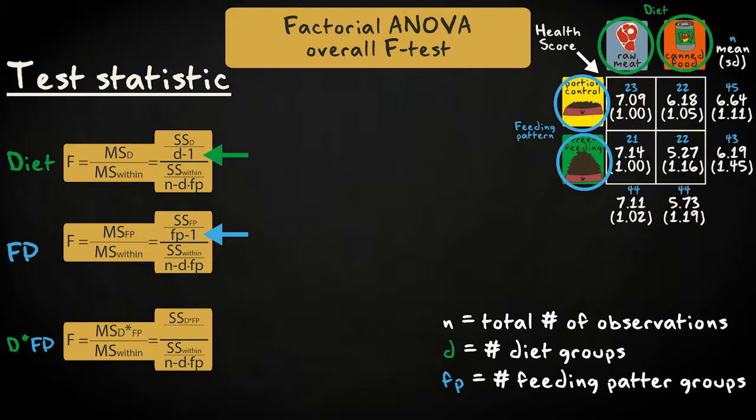For main effects, this is the number of levels for a particular factor minus one. For interaction effects, we take the number of levels for a factor minus one, we do this for all factors, and multiply the results.